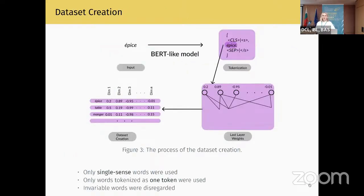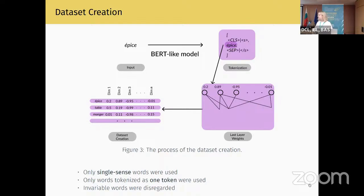I now want to talk about our dataset pipeline creation — how we work with obtaining word embeddings. For this, we took a word from the French vocabulary, for example 'épis', which stands for 'spice'. It was passed to a BERT-like model for tokenization. We obtained the tokenization results, removing CLS and beginning-of-string tokens as well as SEP or end-of-string tokens — we only retrieved the token related to the word itself. We retrieved the weights of the last layer of the model, and by this we created a neat table of words with the values of all dimensions.